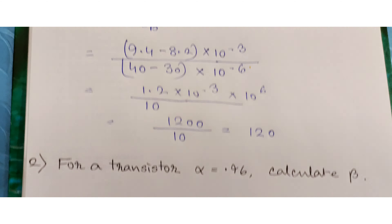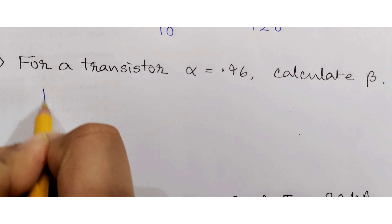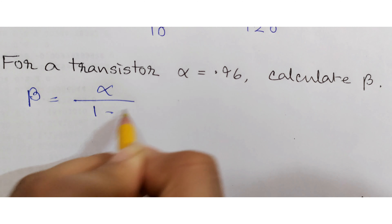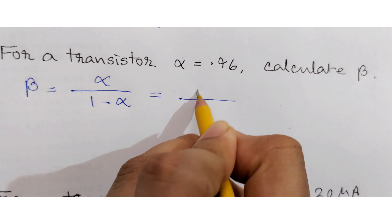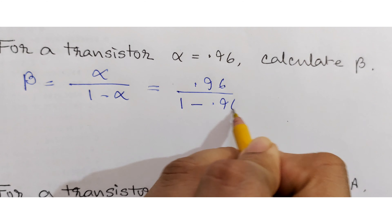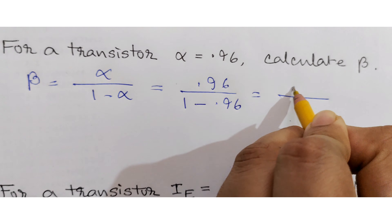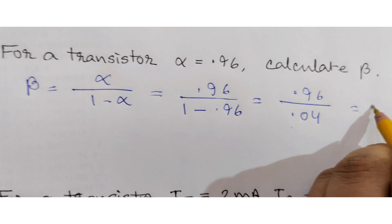Moving on to the next problem: for a transistor, alpha is 0.96 — calculate beta. Beta is basically alpha divided by (1 minus alpha), so 0.96 divided by (1 minus 0.96), which is 0.96 divided by 0.04, giving beta equals 24.